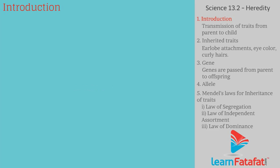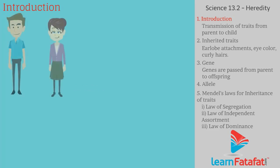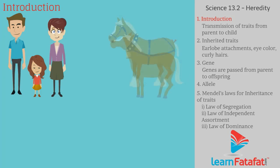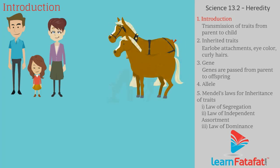The transmission of traits or characters from parent to offspring is called heredity. For example, the offsprings of horses are horses.